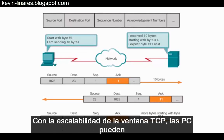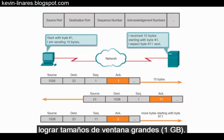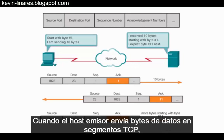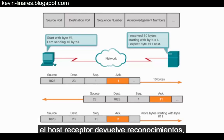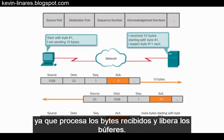Using TCP window scaling, computers are able to achieve large window sizes of up to one gigabyte. So as the sending host sends bytes of data in TCP segments, the receiving host returns acknowledgements as it processes bytes received and frees up its buffers.